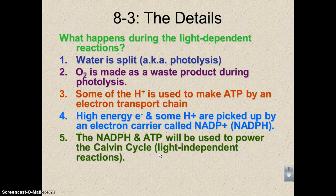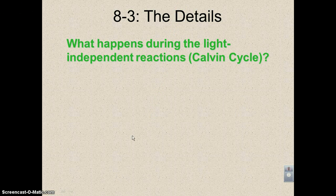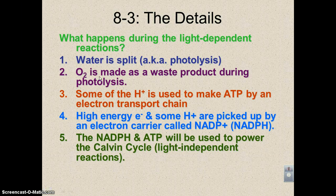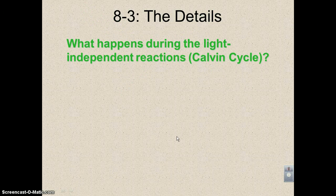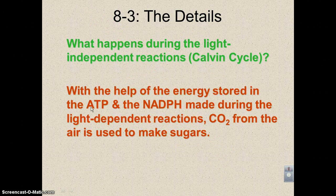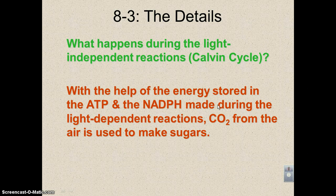The Calvin cycle is also known as the light-independent reaction because it doesn't use light directly. In the Calvin cycle, with the help of ATP and NADPH made in the light-dependent reactions, carbon dioxide from the air is used to make sugars. That sugar is mainly in the form of glucose, C6H12O6.